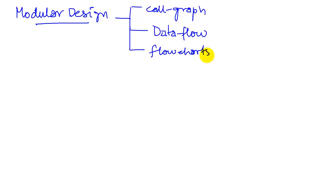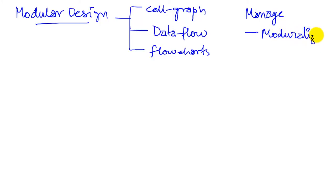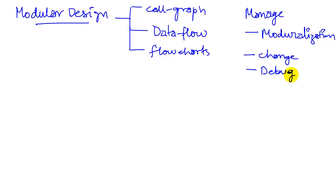Modular design allows us to manage the complexity of a large project. This project is going to be one of the largest you will handle in this class. By modularizing — breaking down our system into small modules — this will allow us to manage change and debug easily. We test one module, verify it works, and then hide that module like a box and work around it.